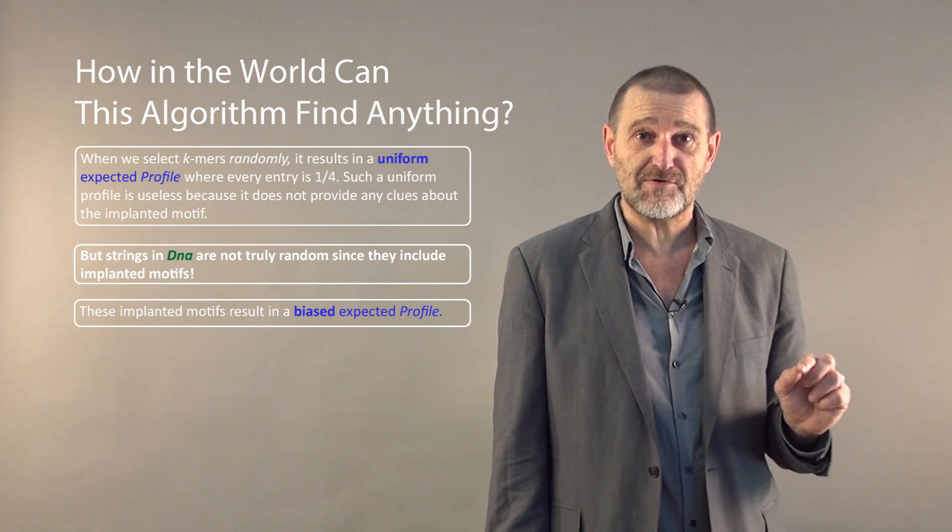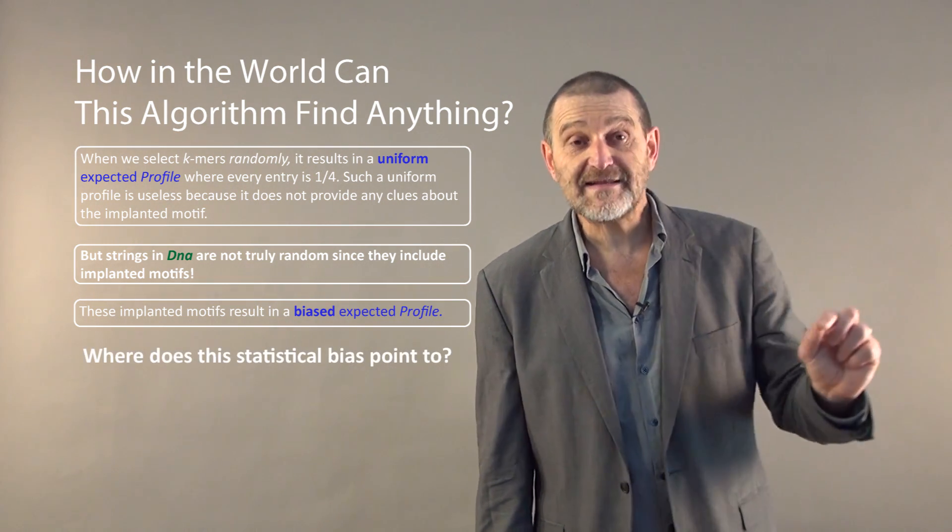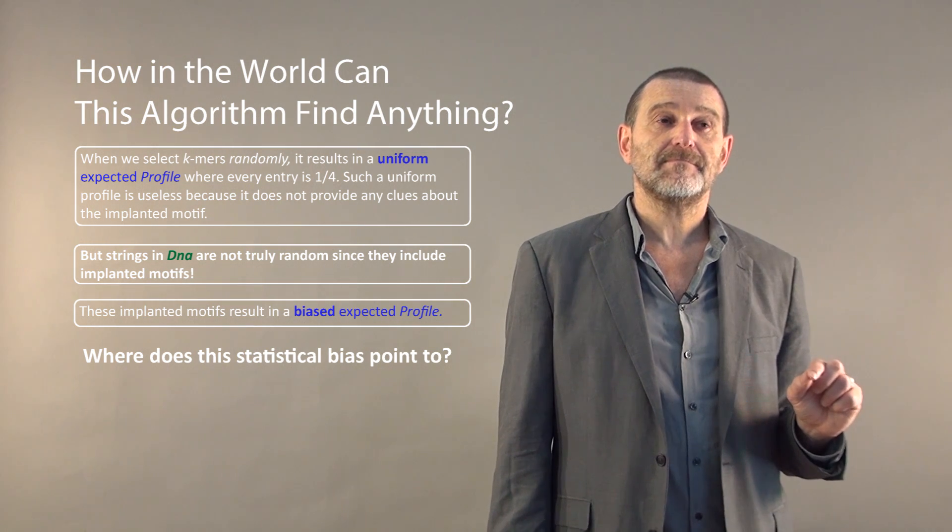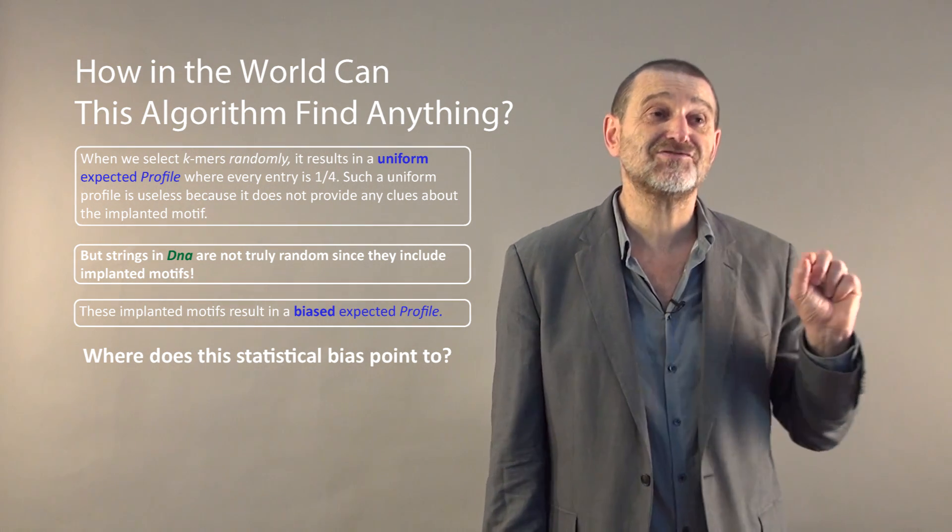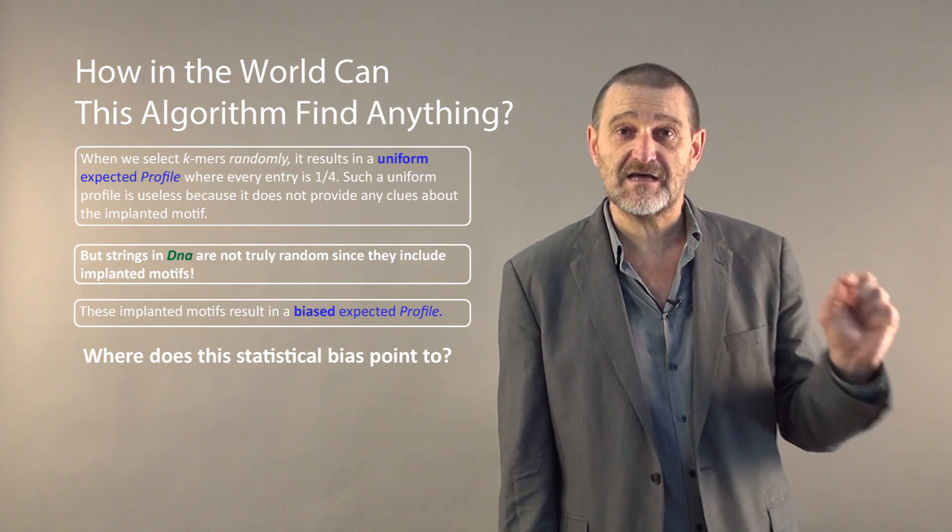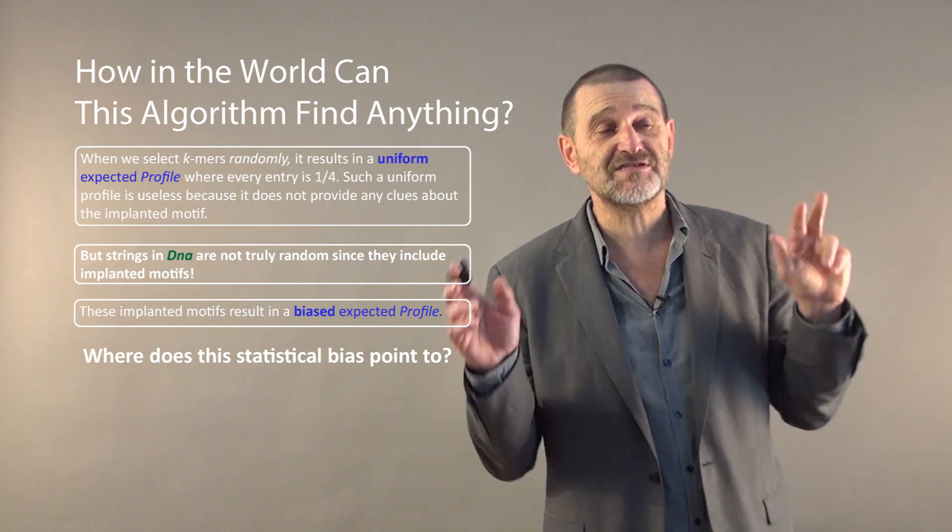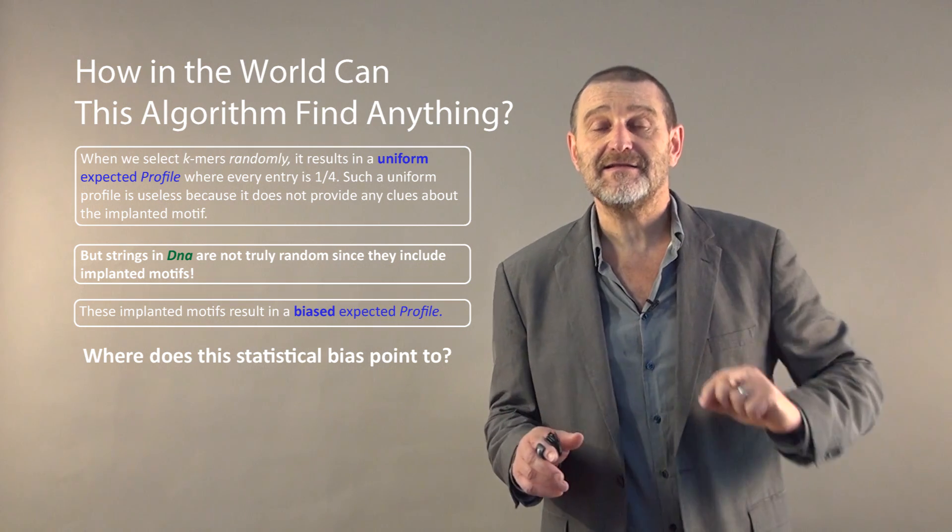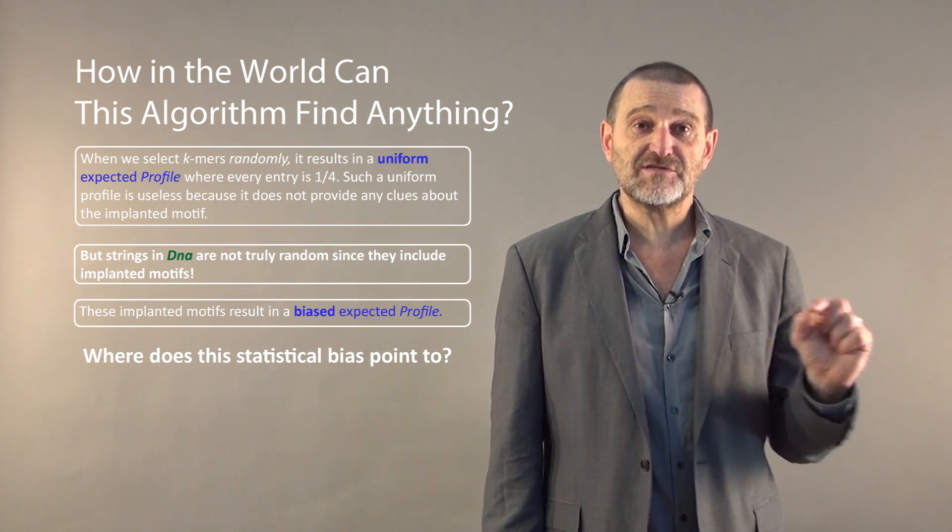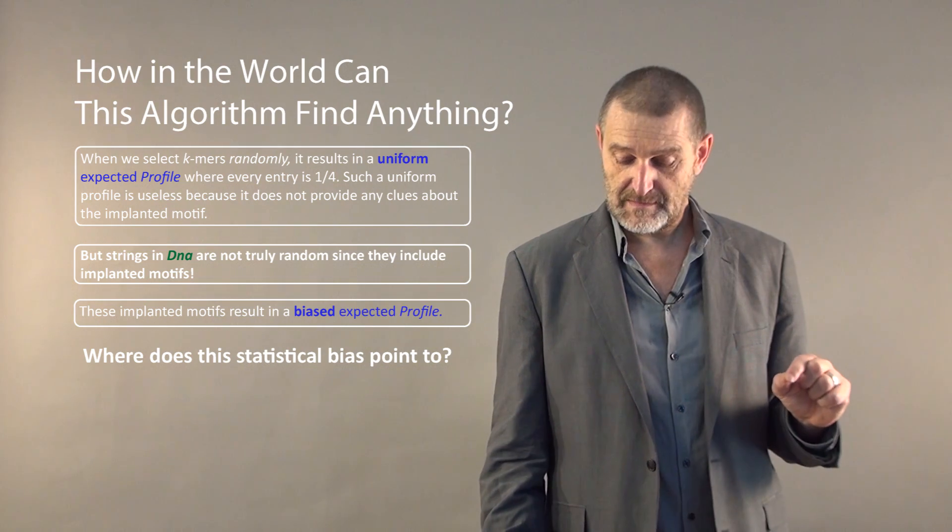Therefore this implanted motif results in a biased profile. It's not a completely random profile. Where does the statistical bias point to? If it points to the direction of the implanted motif, then there is no miracle that we start from something random which is not really random and applying iterative procedure arrive to a hidden pattern.